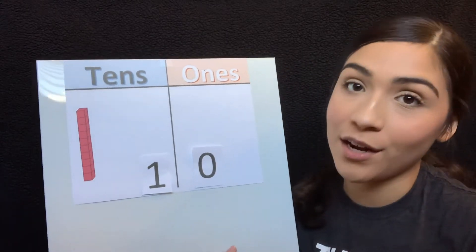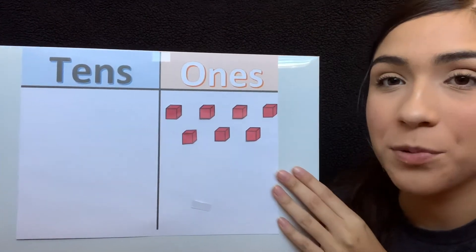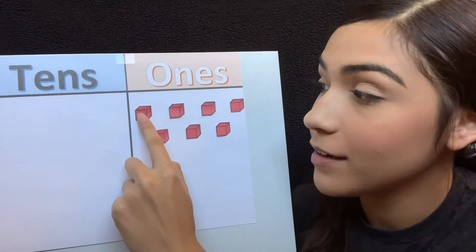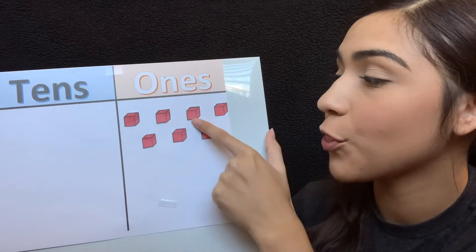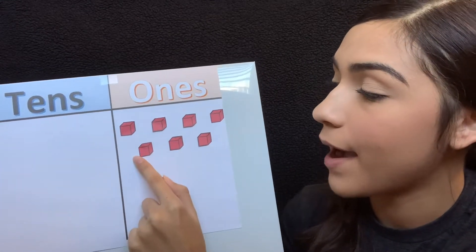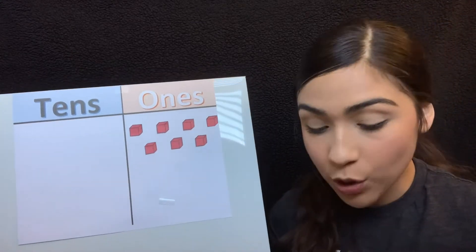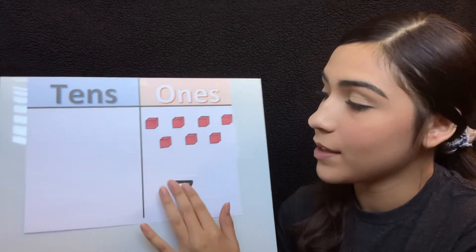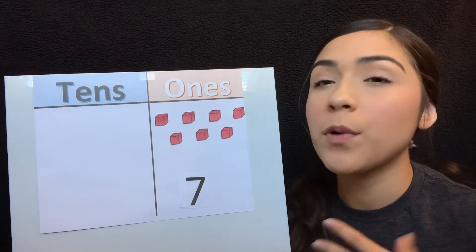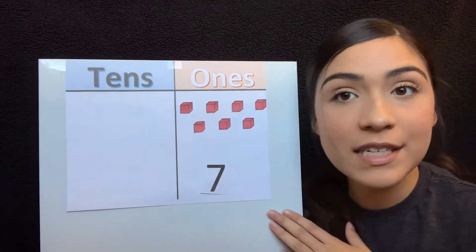Let's try another one. For our next example, let's count how many ones we have. Are we ready? One, two, three, four, five, six, seven. So we have seven ones. Now are we breaking the rule? No, right? Seven is a digit.